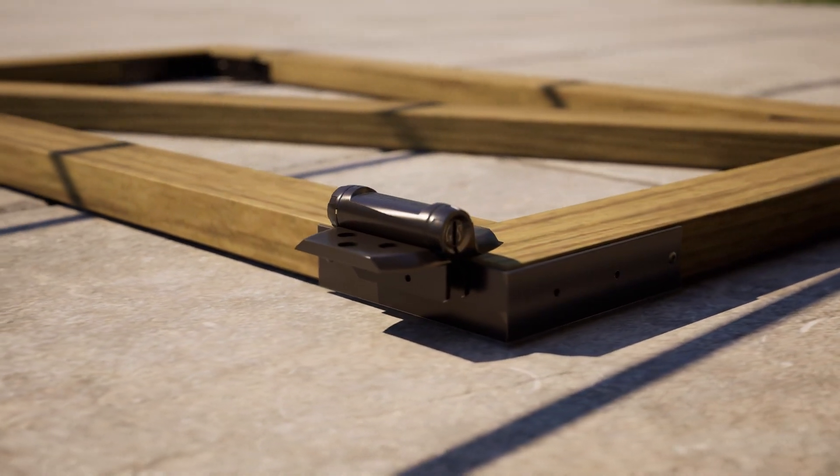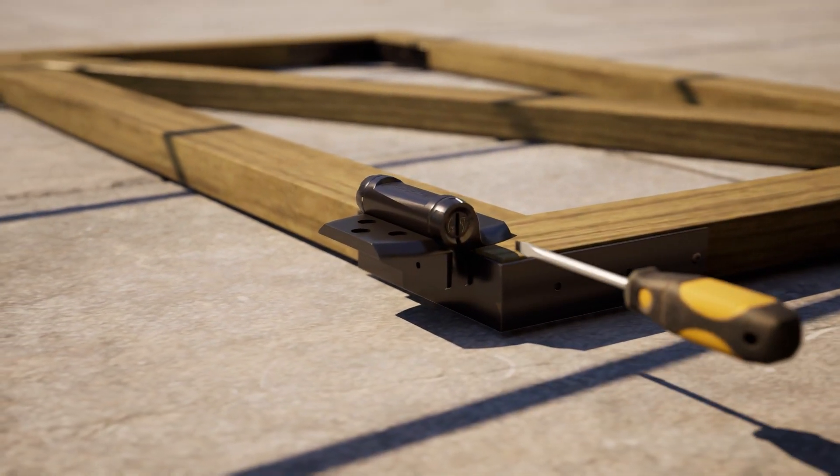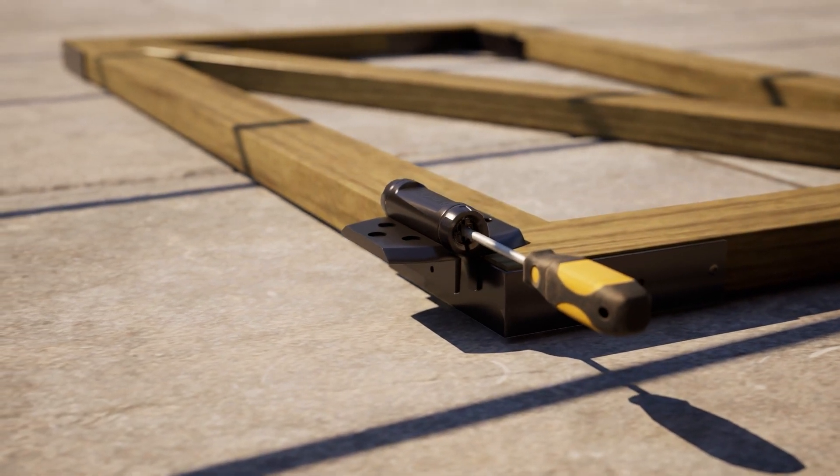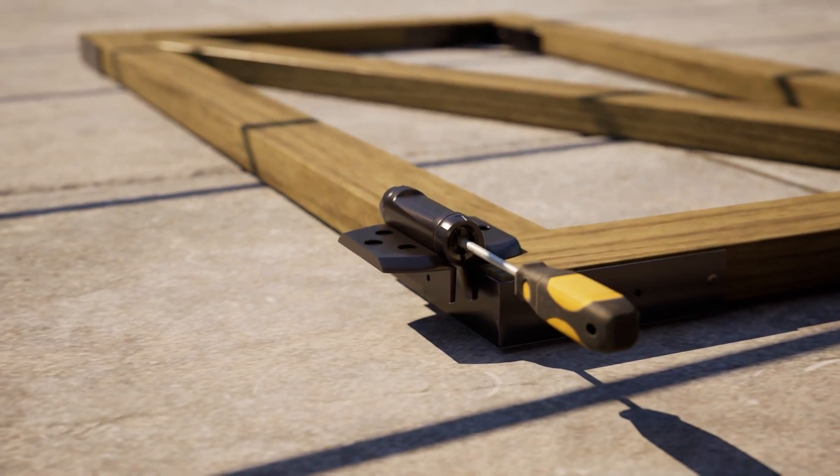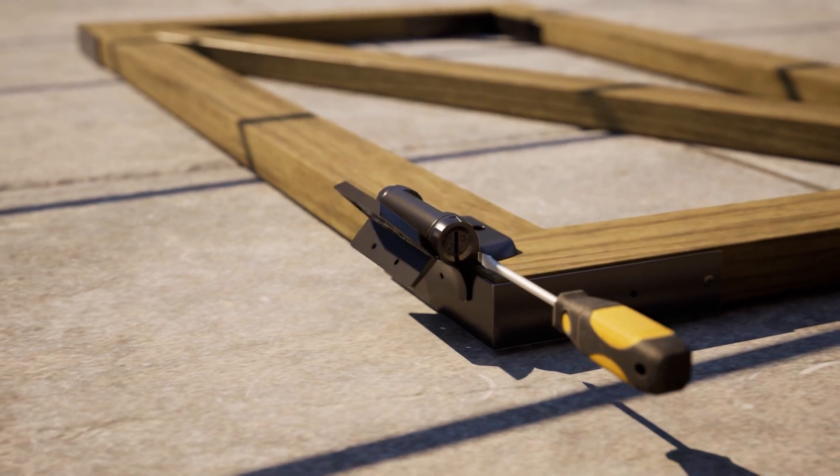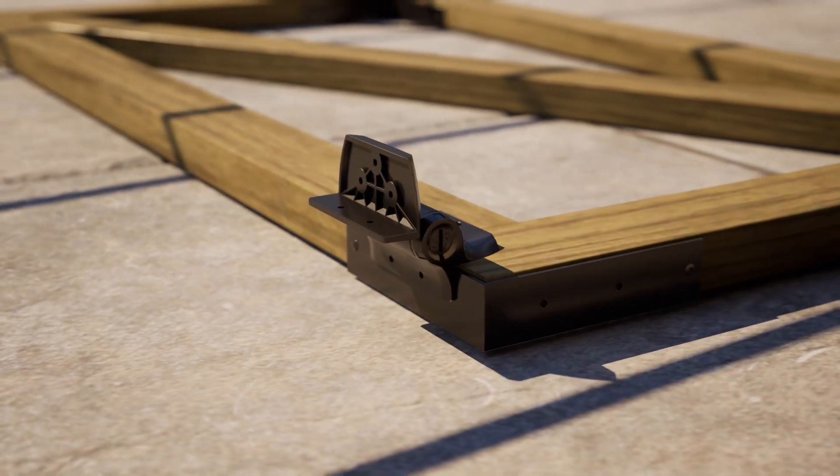To loosen up the hinge, making it easier to attach to the frame, use a flat head screwdriver and simply press down on the top barrel of the hinge to turn clockwise, then release.